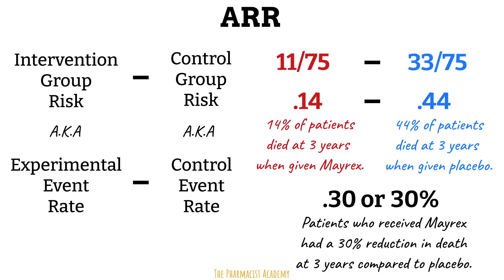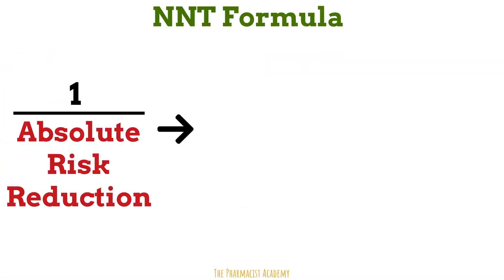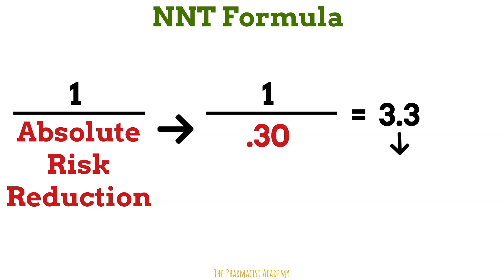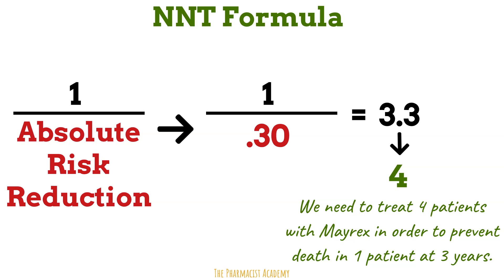Now that we have the absolute risk reduction, we can calculate the number needed to treat. Back to the formula: it will be one divided by the absolute risk reduction, which is 0.3. When calculating NNT, use the absolute risk reduction without the percent sign, and we get 3.3. Always round up to the nearest whole number — so four. This means we have to give four patients with prostate cancer Marex to reduce the risk of death in one patient at three years. In other words, for every four patients that receive Marex, one will not die by three years.